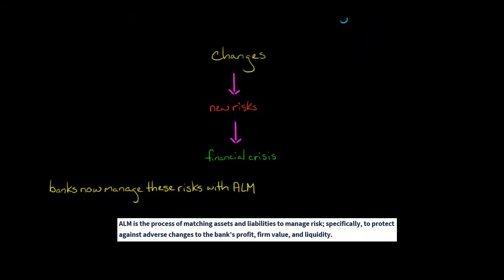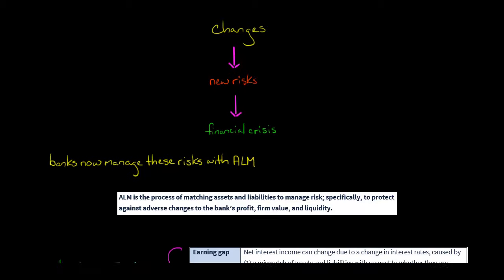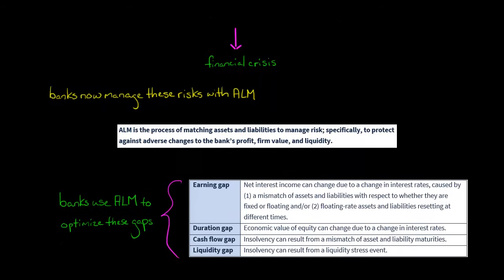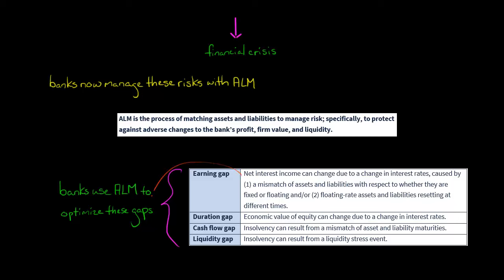ALM is about managing risks. Specifically, the bank is trying to match assets and liabilities — in terms of fixed versus floating rates and long term versus short term. We're going to talk about the gaps that exist and create issues for banks, and how they try to optimize these gaps. Ultimately, the goal is to protect the bank's profit, specifically measured by their net interest income, and also the firm value.